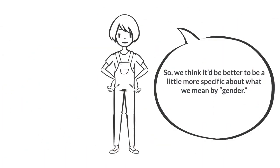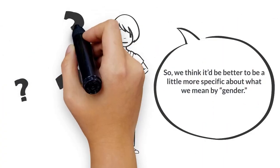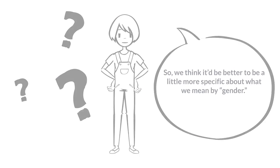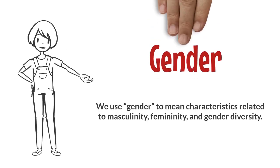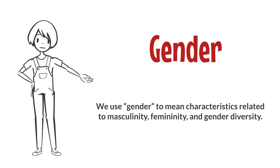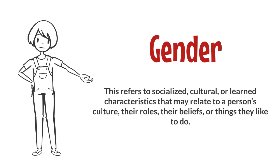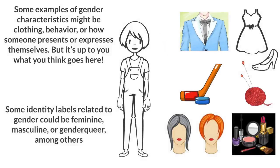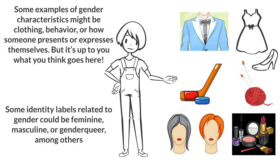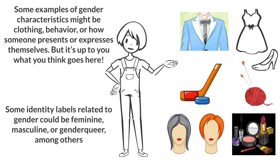So we think it'd be better to be a little more specific about what we mean by gender. We use gender to mean characteristics related to masculinity, femininity, and gender diversity. This refers to socialized, cultural, or learned characteristics that may relate to a person's culture, their roles, their beliefs, or things they like to do. Some examples of gender characteristics might be clothing, behavior, or how someone presents or expresses themselves, but it's up to you what you think goes here.